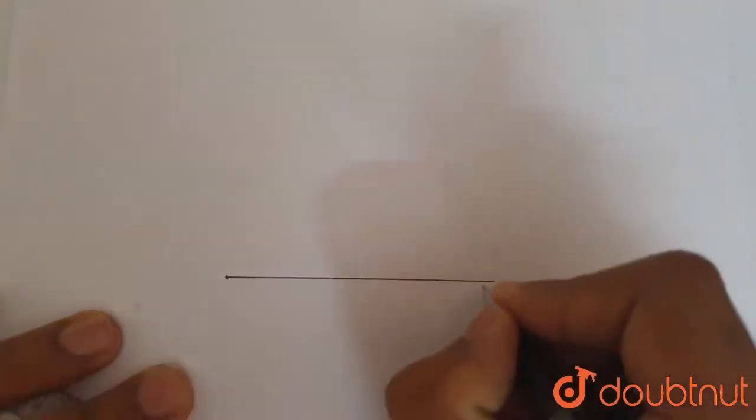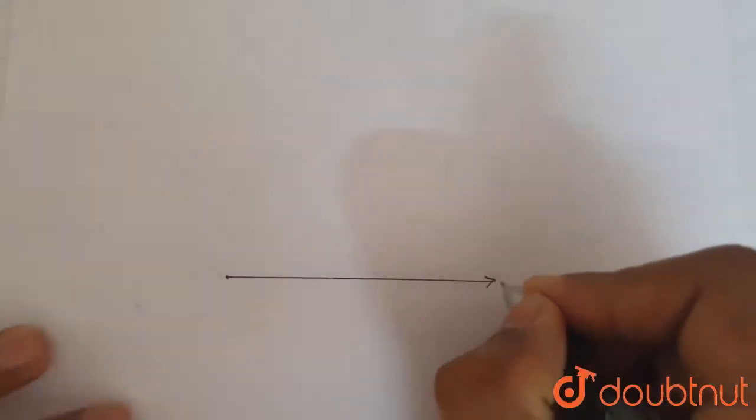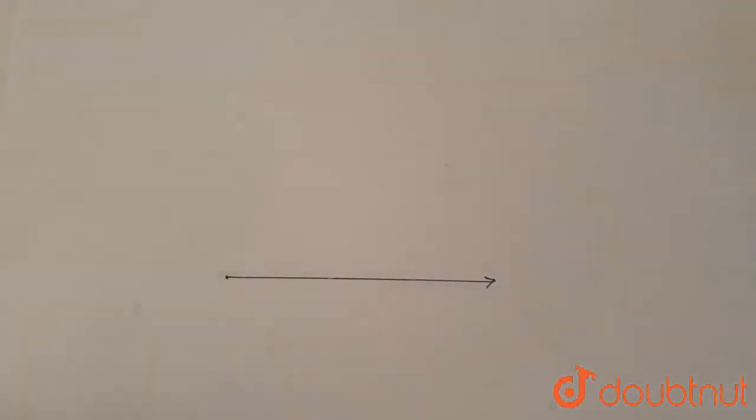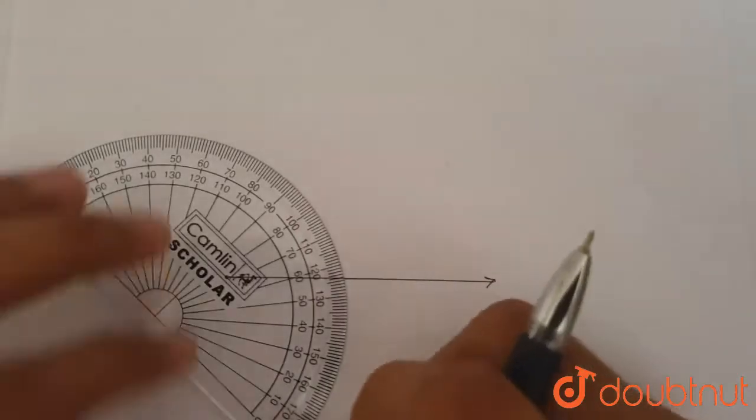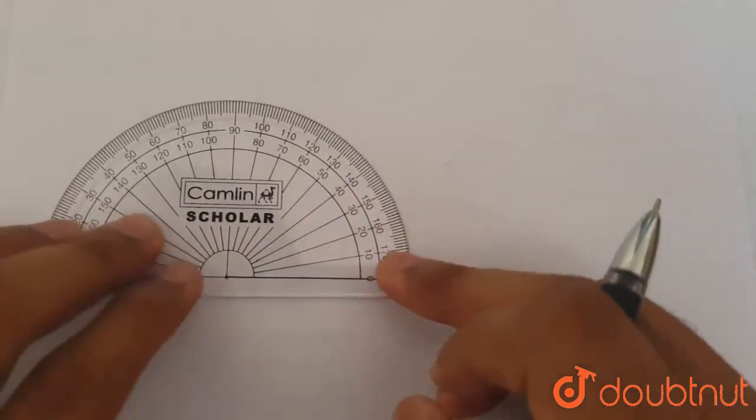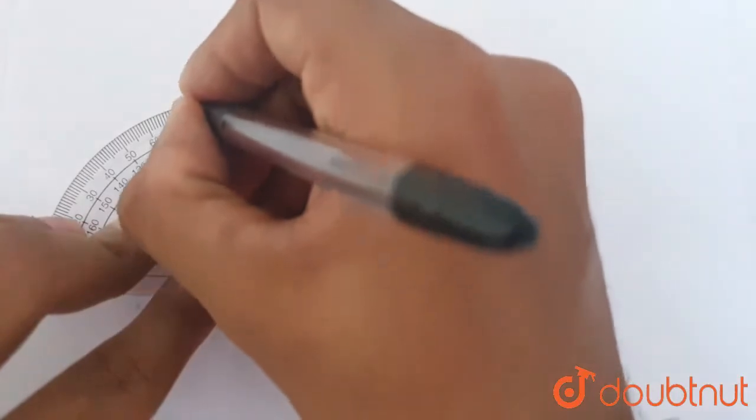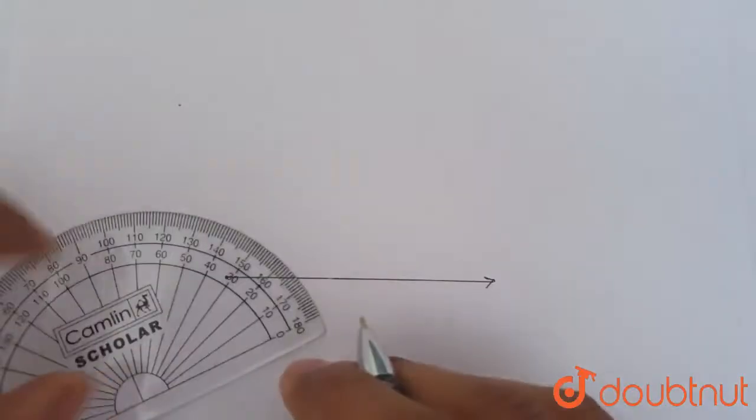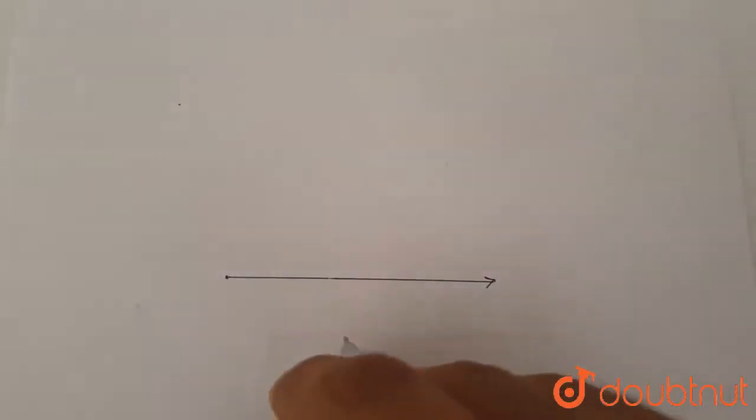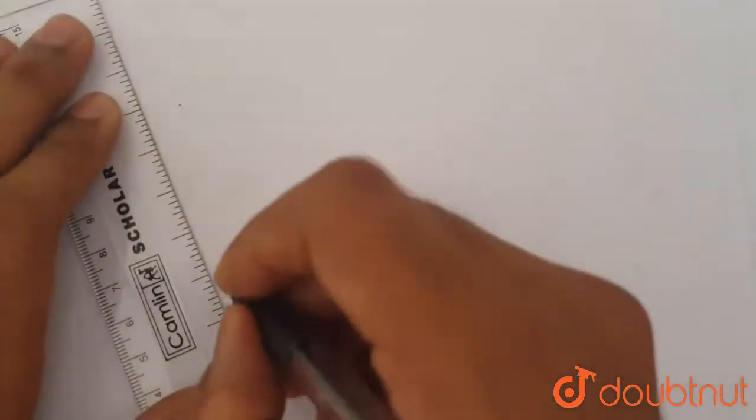So we make the base and using a protractor, mark 108 degrees with respect to a ray. So 108 degrees is this. So we mark it and then complete this angle.